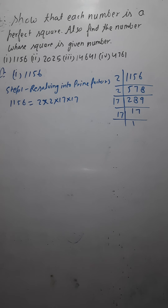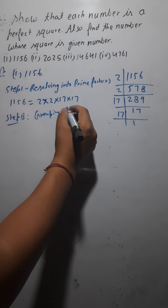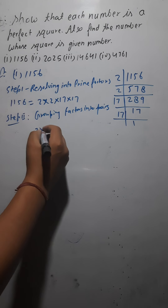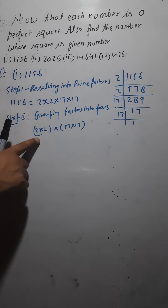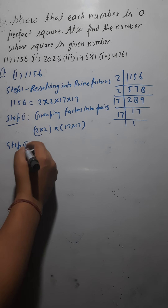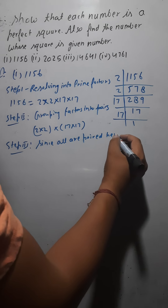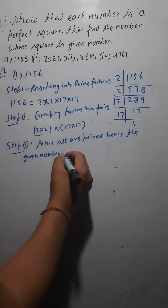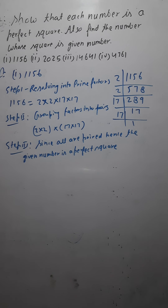Step number two: grouping factors into pairs. Grouping the 2s together gives one pair of 2, and grouping the 17s together gives one pair of 17. So we have two complete pairs. Since all factors are paired, hence the given number is a perfect square.